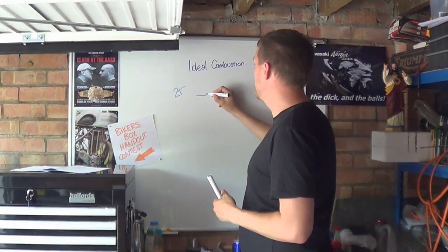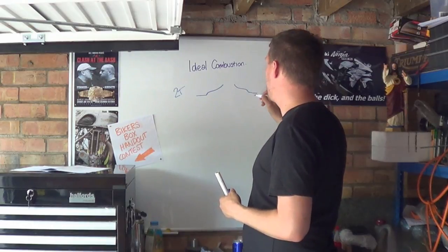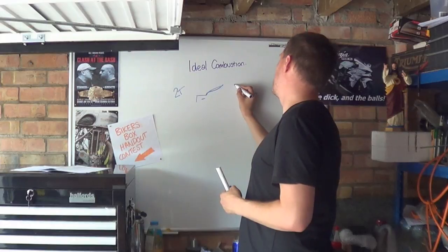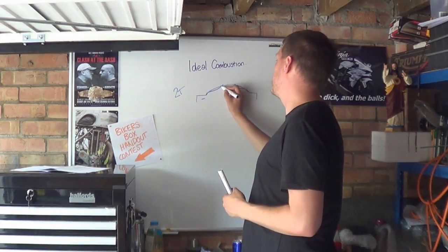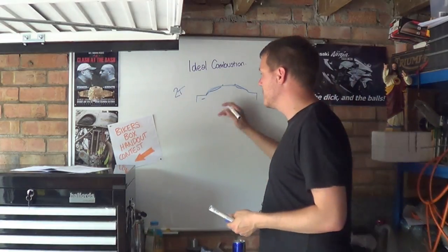Two-strokes generally have a combustion chamber that looks like this. You have a squish band, then you have a dome. It could be any kind of variant of this, but basically it's a dome.